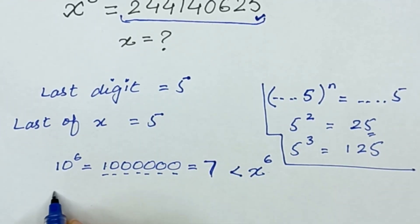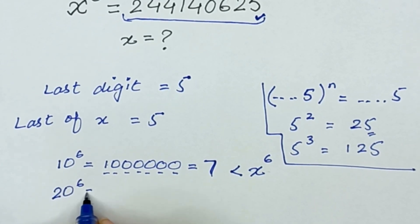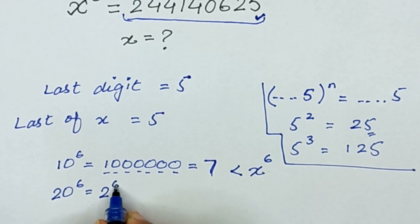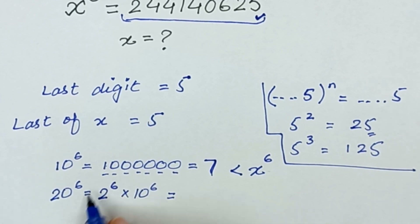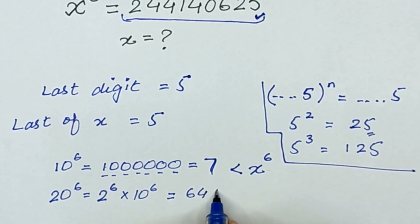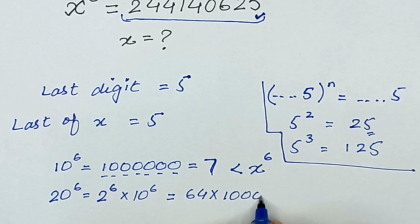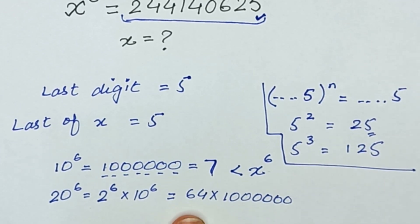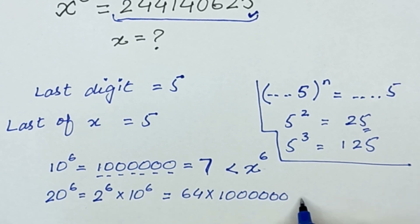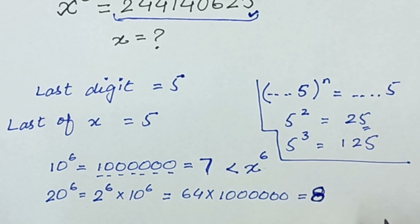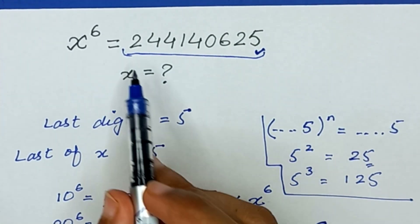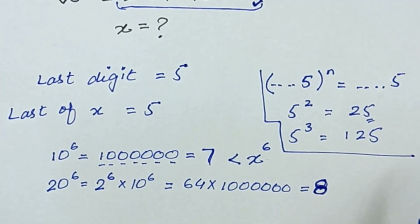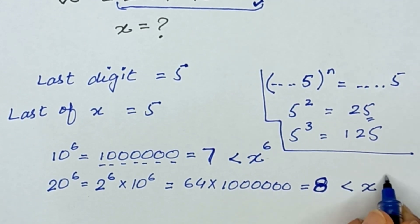Now we check 20 raised to the power 6, which equals 2 raised to the power 6 multiplied by 10 raised to the power 6. That is 64 times 10^6, giving an 8-digit number. Comparing with our equation which has 9 digits, 20^6 is also less than x^6.